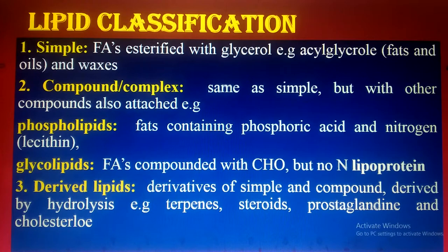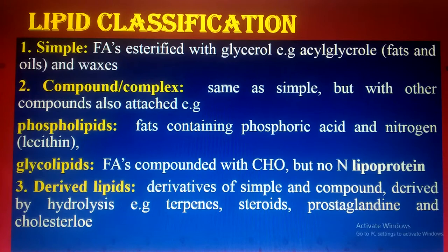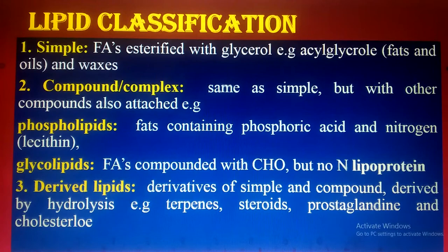Fatty acids are the building units of lipids, just like amino acids are the building units of proteins and monosaccharides are the building units of carbohydrates. Fatty acid reacting with glycerol produces simple lipids. Complex lipids are the same as simple lipids but with other compounds also attached — for example, phospholipids and glycolipids. Derived lipids, as the name indicates, are derivatives of simple and complex lipids obtained by hydrolysis — for example, terpenes, steroids, prostaglandins, and cholesterol.